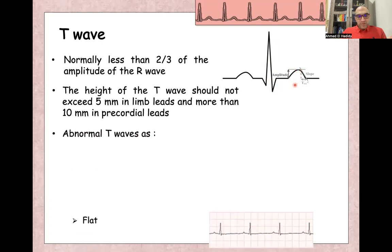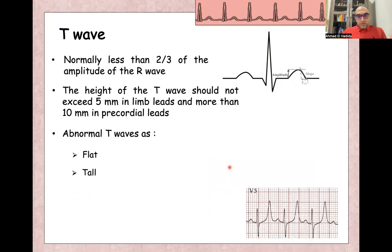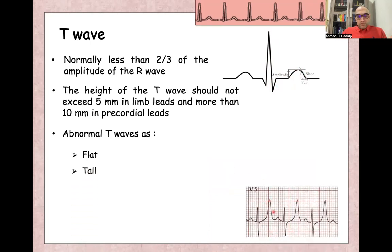Abnormal T wave examples like a flat T wave is flat or isoelectric. This is abnormal T wave. Also, tall T wave is abnormal.